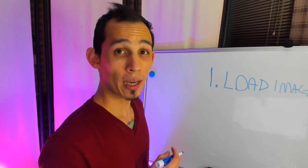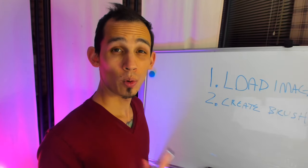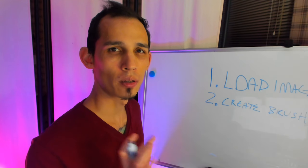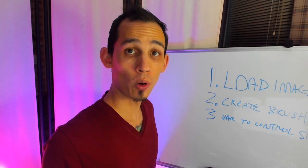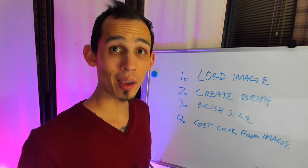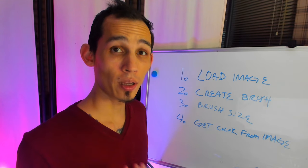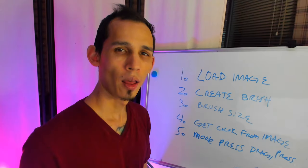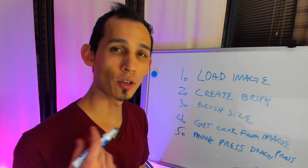I drew this painting, but with computer assistance. First, we're gonna want to load an image. Second, we want to create a brush. Third, we want to create a variable to control the size of the brush. Fourth, we want to get the pixel color from the original image. Fifth, we want to make our mouse interactive whenever we press down and whenever we drag. Then we need to be able to control the size of the brush.